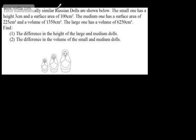In this question, we're told three mathematically similar Russian dolls are shown below. The small one has a height of 3 centimetres and a surface area of 100 centimetres squared. The medium one has a surface area of 225 centimetres squared and a volume of 1,350 centimetres cubed. The large one has a volume of 6,250 centimetres cubed. We're asked to find: one, the difference in the height of the large and medium dolls, and two, the difference in the volume of the small and medium dolls.